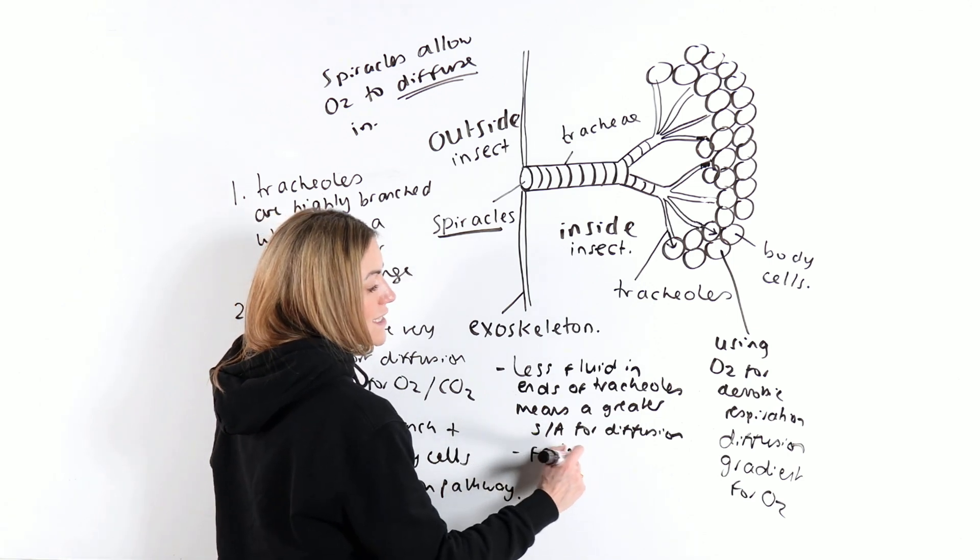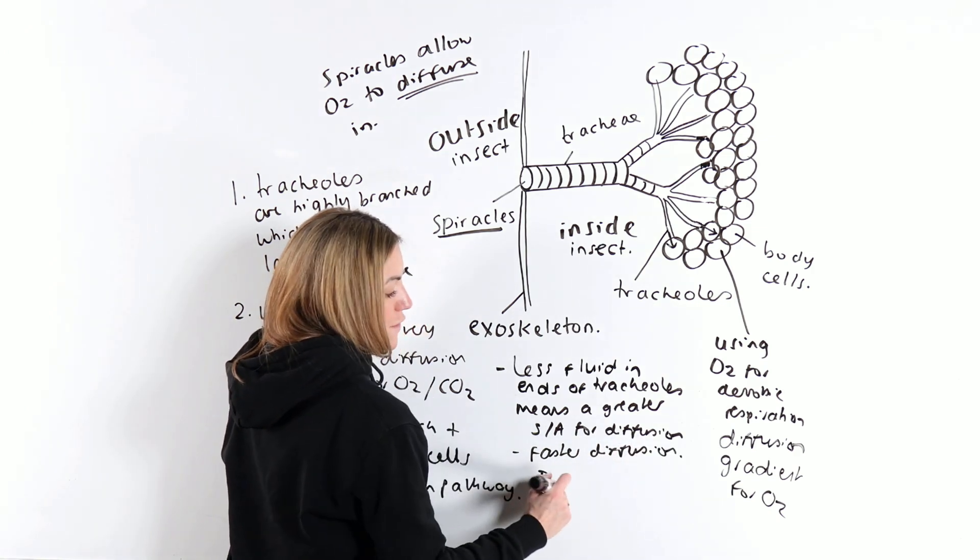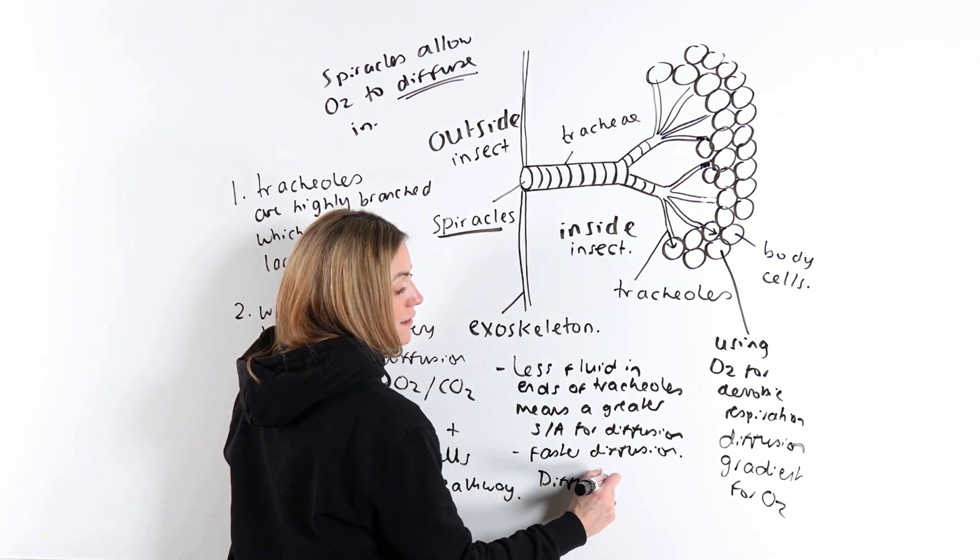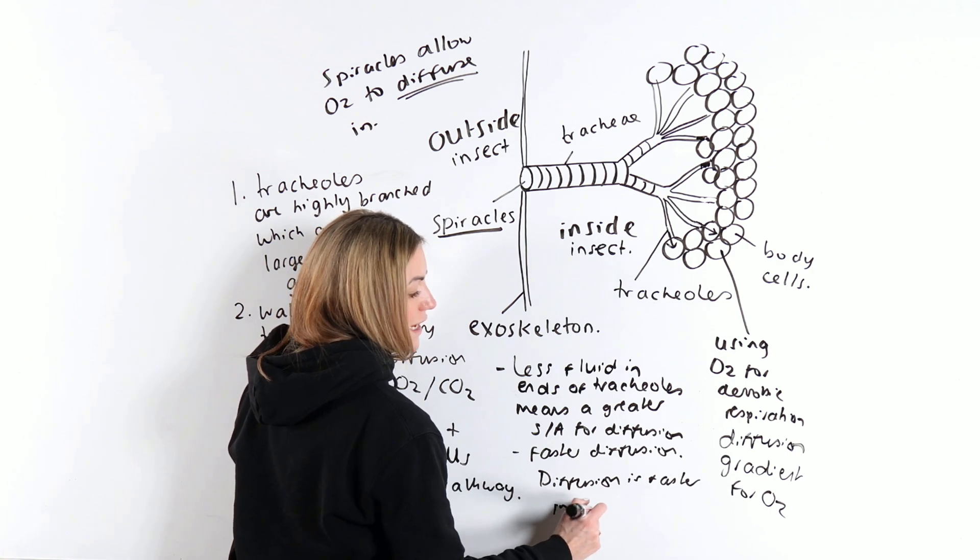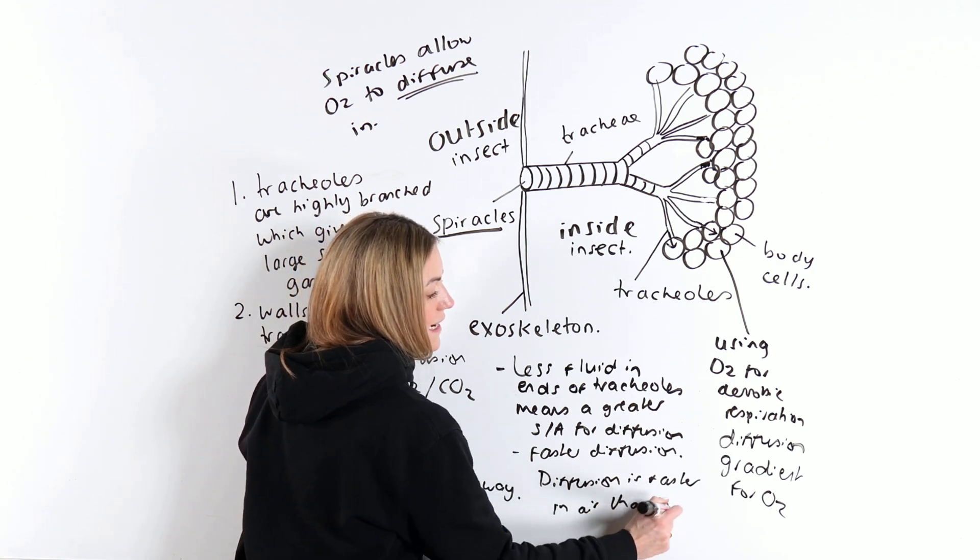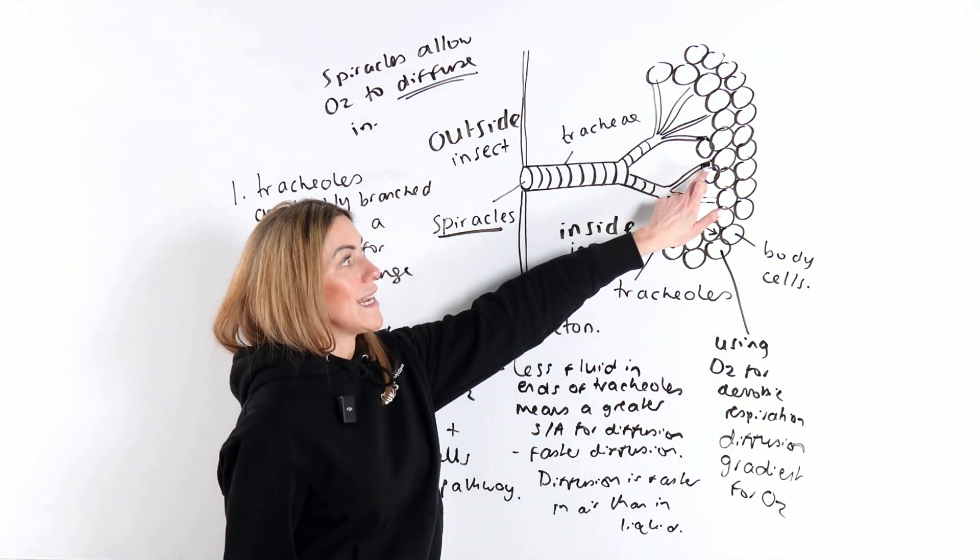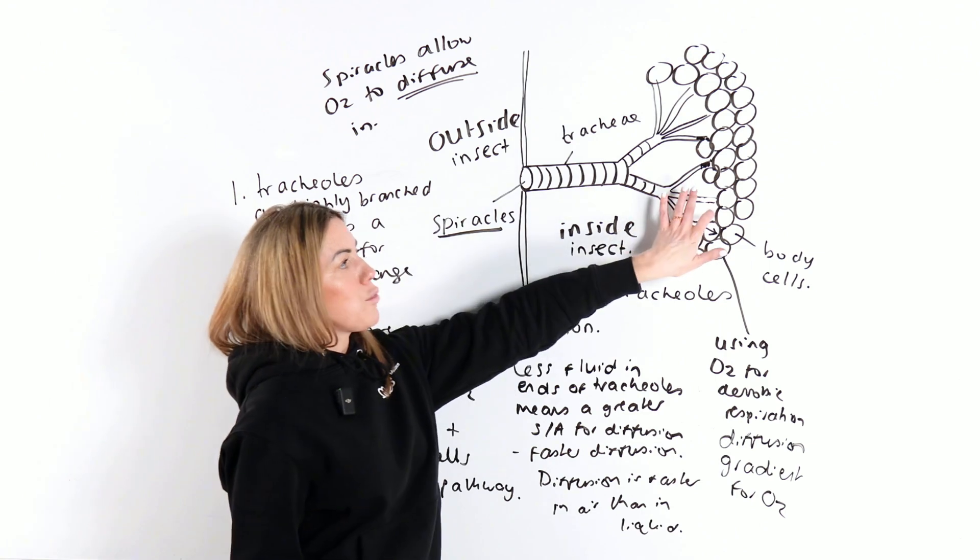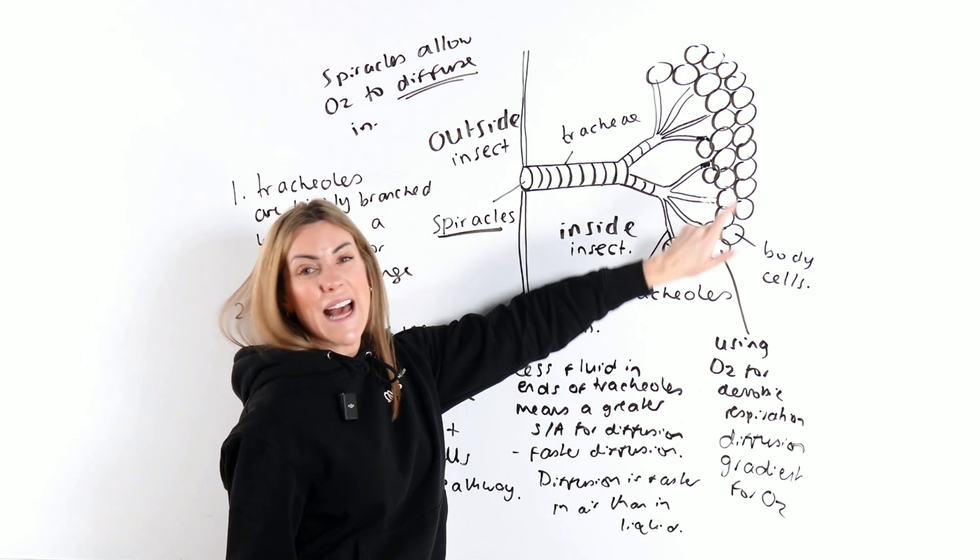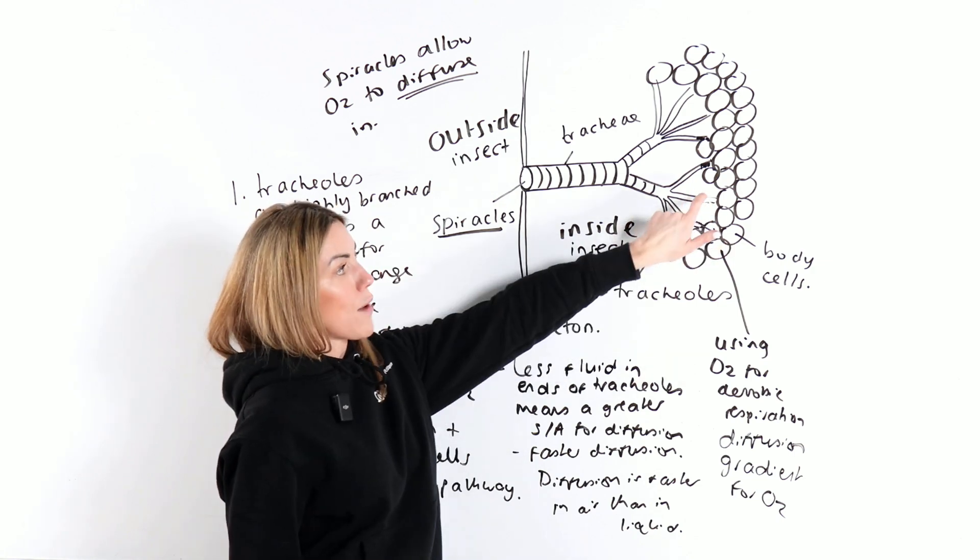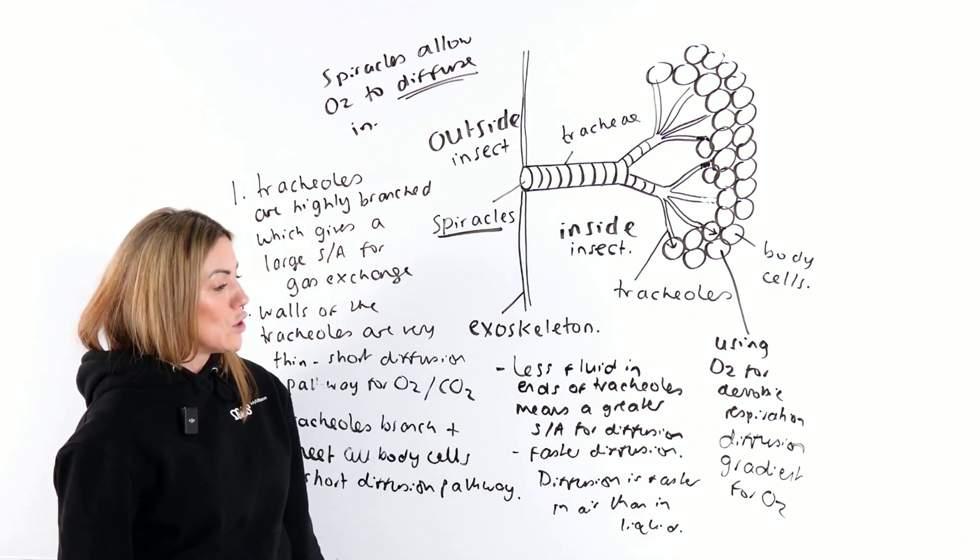Less fluid in the ends of tracheoles also means faster diffusion because diffusion is faster in air or in gas than in liquid. So if the oxygen has to diffuse through that liquid, it will be slower. If we remove that liquid and it moves into the tissues, there's no liquid. It doesn't have to diffuse through that liquid anymore. It's going straight across the wall, straight into the body cell. So the diffusion is going to be much faster.